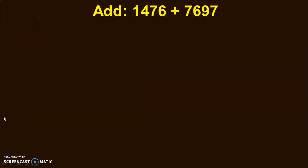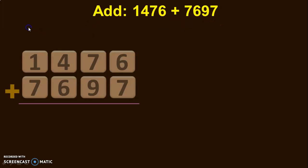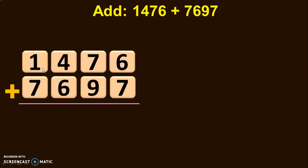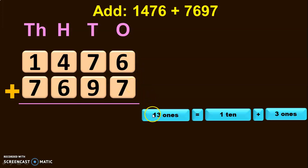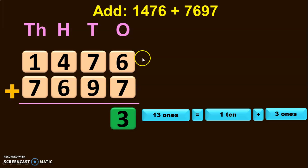Let us do the next example. Questions can also be given in horizontal form, and children will have to take these numbers and put them in the form of vertical addition to proceed with the addition concept. So 1,476 plus 7,697. Write down the place values and start the addition with the ones place. 6 plus 7 will give you 13 ones. 13 ones can be regrouped as 1 ten plus 3 ones. So retain the 3 ones in the ones place and 1 is taken as a carryover to the tens place.